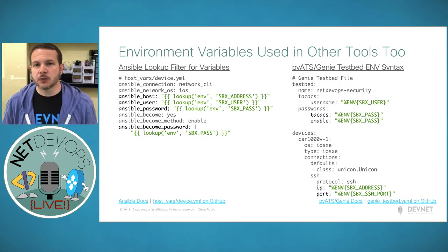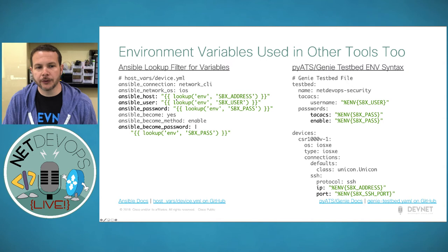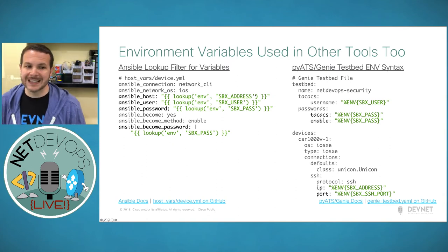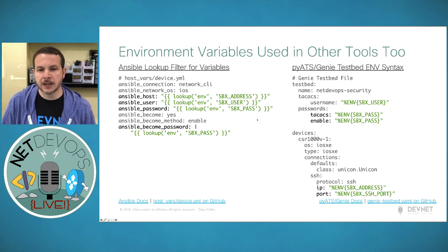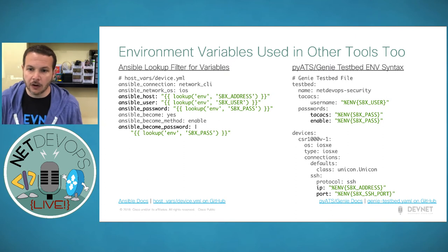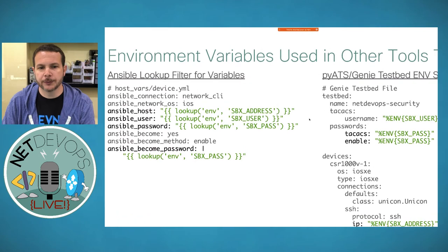Environment variables can be used in lots of tools like Ansible and PyATS/Genie. Inside Ansible, we can use the lookup Jinja filter to search our environment for a particular environment variable and place those values into host, username, and password fields. Inside Genie testbed files, there's a percent ENV lookup we can leverage to do the same thing — so all those secrets don't exist in the raw files, and we can use the same environment variables with these other tools.